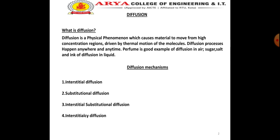Diffusion mechanisms. Following are the diffusion mechanisms: interstitial diffusion, substitutional diffusion, and interstitial-substitutional diffusion. Interstitial diffusion is our first point. The impurity atom moves through the crystal lattice by jumping from one interstitial site to another adjacent interstitial site.